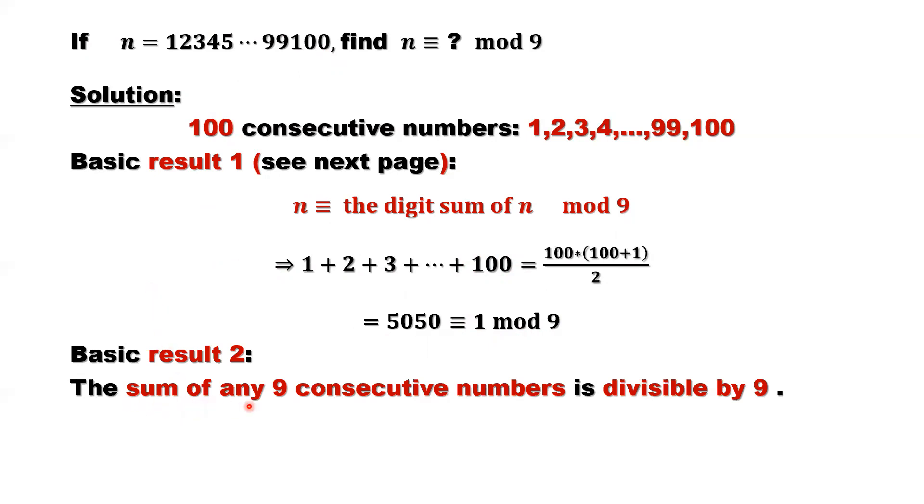The sum of any 9 consecutive numbers is divisible by 9. For example, inside of this sum, 1 plus 2 plus 3 until 9, put them together. This number, the sum of the first 9 items is divisible by 9. Then we can consider the second piece, the sum of the second 9 items. It's also divided by 9.